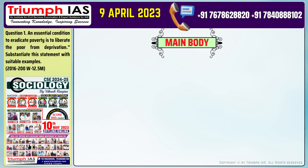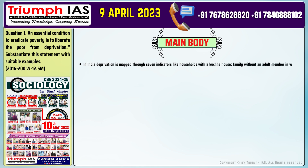The main body of the answer. Number one: In India, deprivation is mapped through seven indicators like households with a kuchha house, family without an adult member in working age, etc. The more the number of parameters on which a household is deprived, the worse its extent of poverty.